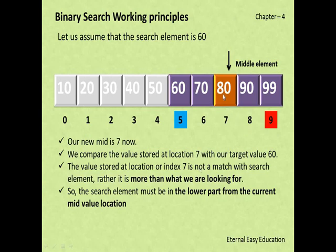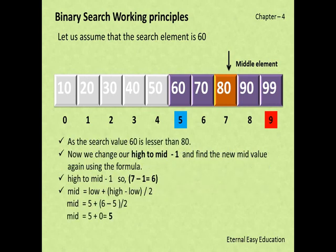Since 80 is greater than 60, we can ignore index 7 to 9. The search range is now 5 to 7. We move the high pointer to mid − 1, so the new highest value becomes 6.